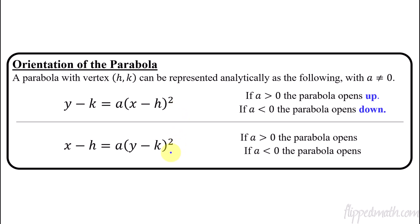What you're probably not as used to is when a parabola opens left or right. When the y is being squared and it's in the form x equals with the h part, it creates a left or right parabola. If a is positive the parabola opens right, and if a is negative it opens to the left. Notice also that h stays with x and k stays with y — the h is always the x value of the vertex.